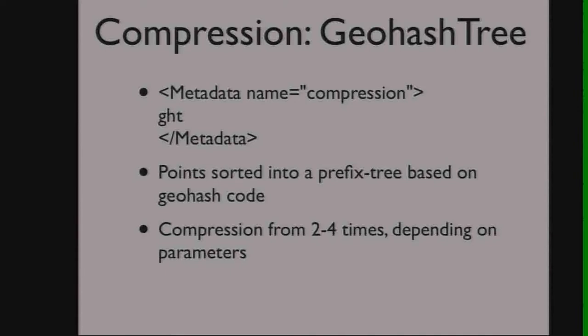And then we have a third one implemented right now — the geohash tree compression, which Nuri will talk about in the third block. That takes the points and sorts them into a prefix tree, dropping bits that are common to all the points and moving shared data up to the point in the tree where it's common to all children. So it's both a compression and an ordering scheme, allowing you to go into your patches fairly efficiently and pick bits out. We're still figuring out the most effective way to use it, but it's a really cool trick.